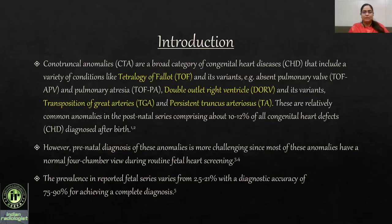Conotruncal abnormalities are a broad category of congenital heart diseases that include a variety of conditions like tetralogy of Fallot and its variants like absent pulmonary valve and tetralogy of Fallot with pulmonary atresia, double outlet right ventricle and its variants, transposition of great arteries, and persistent truncus arteriosus. These are relatively common anomalies in postnatal series comprising about 10 to 12 percent of all congenital heart defects diagnosed after birth.